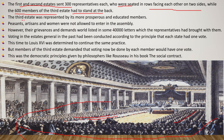The third estate was represented by its more prosperous and educated members. However, peasants, artisans, and women were not allowed to enter the assembly. Despite this, their grievances and demands were listed in some 40,000 letters which the representatives had brought with them.